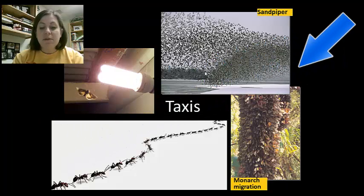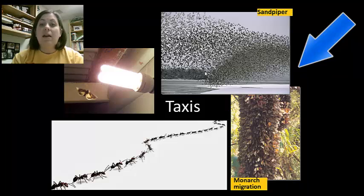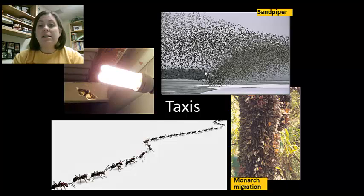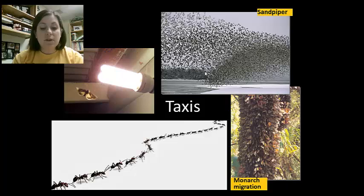Some animals, like birds, are able to use the sun and stars for navigation during seasonal migration, which is a complex form of innate behavior. We can also see this with the monarch butterfly migration — they use navigation tools in order to get where they need to go, and it's in their genetics. It's not something they have to learn; they automatically know where they need to go and travel. This is a form of taxis: innate, genetic behavior.